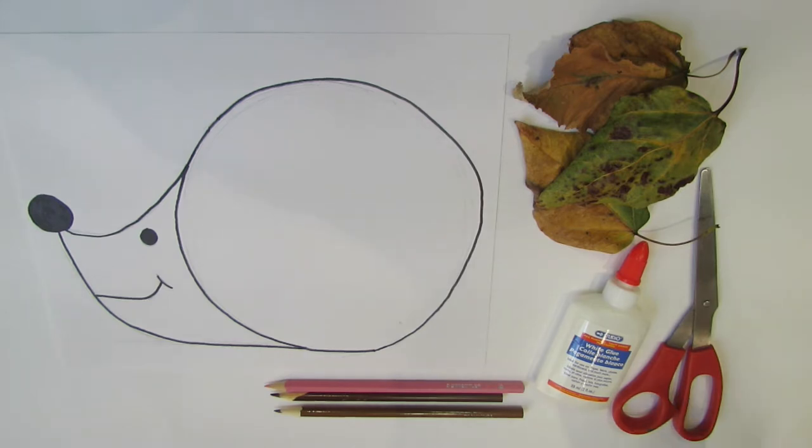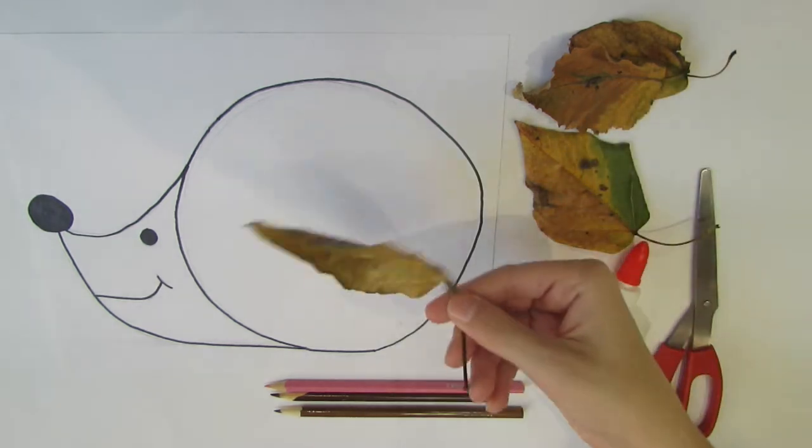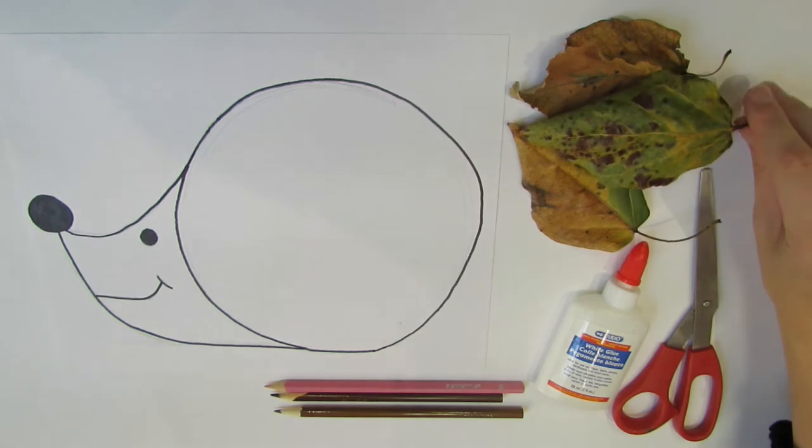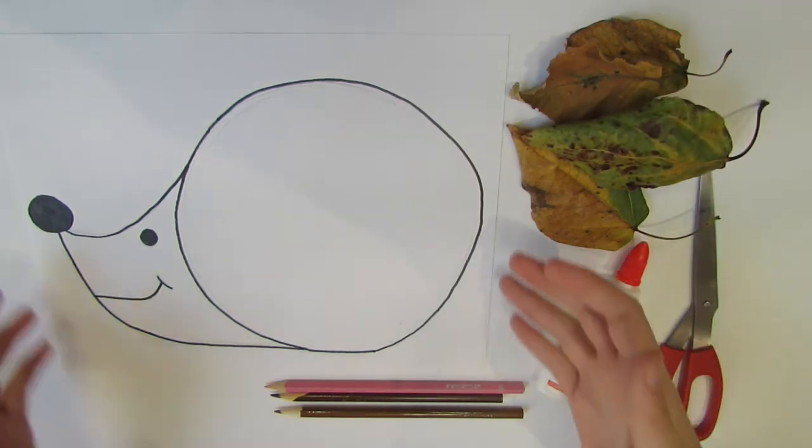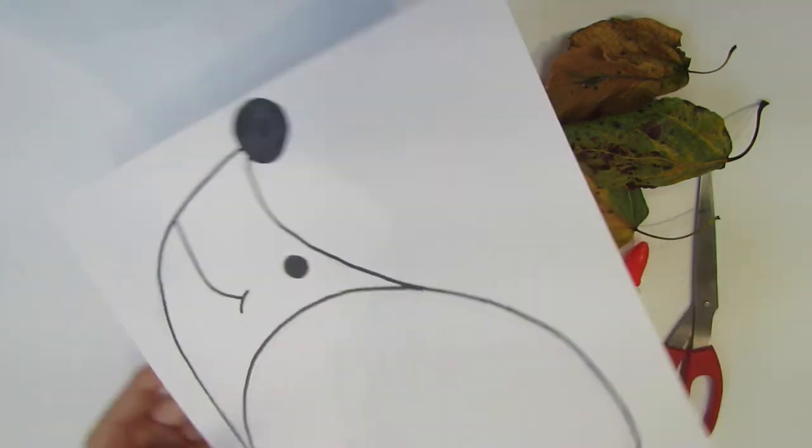For this craft, you will need assorted leaves that you can gather outside, some white glue, pencil crayons, scissors, and a hedgehog template which you can draw yourself or print out online.